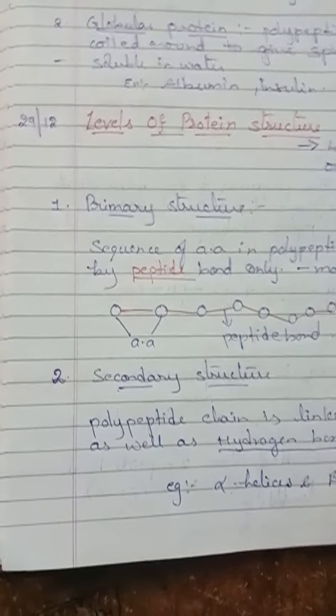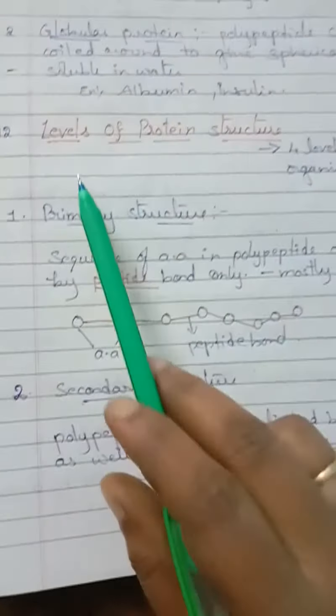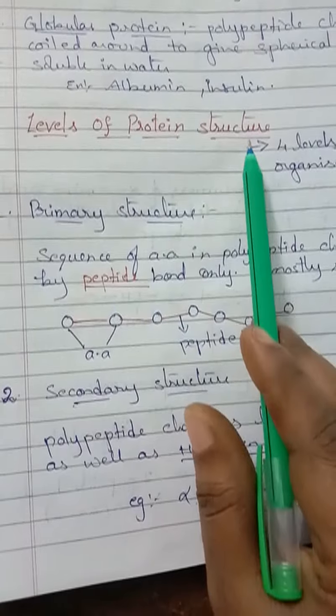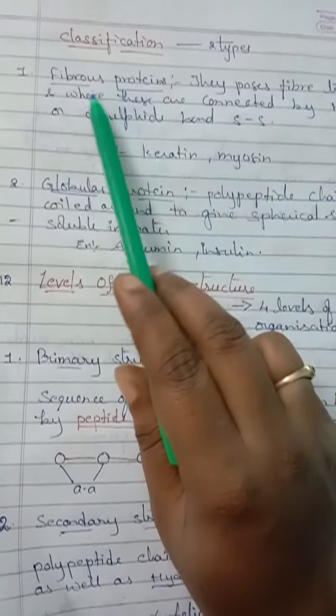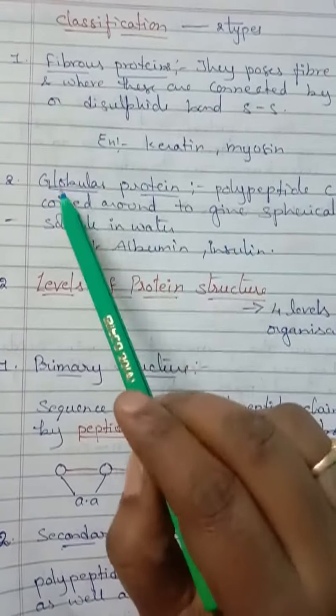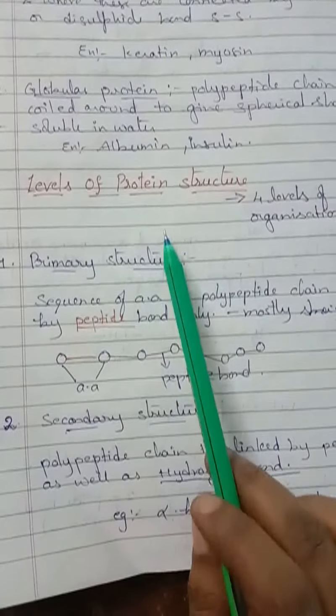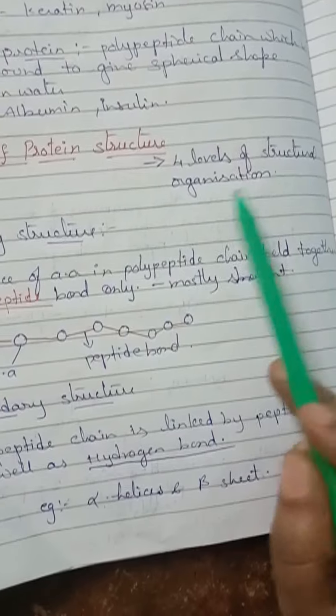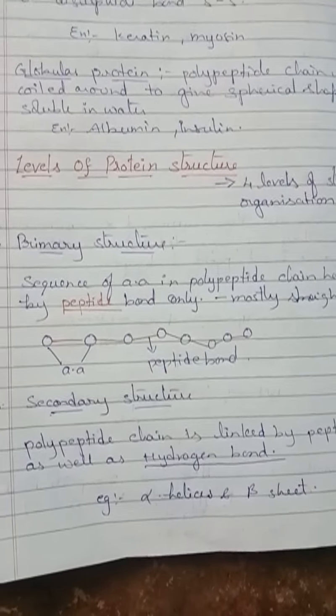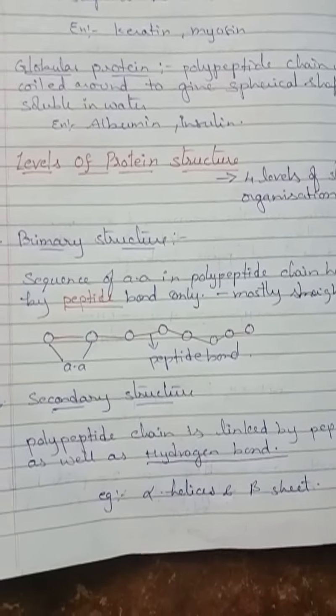Hello students. In today's session we are going to learn the levels of protein structures. We already discussed what proteins are and their classification into two types: fibrous proteins and globular proteins. Next, the levels of protein structures — there are four levels of structural organization, divided into four types based on how they are arranged.